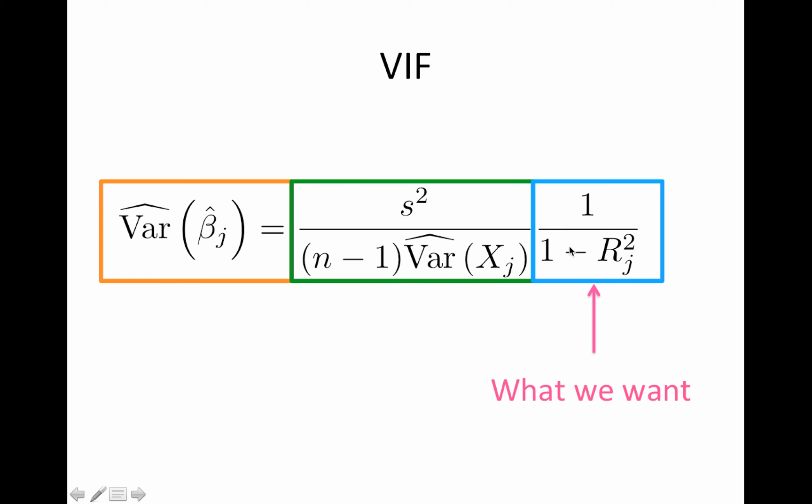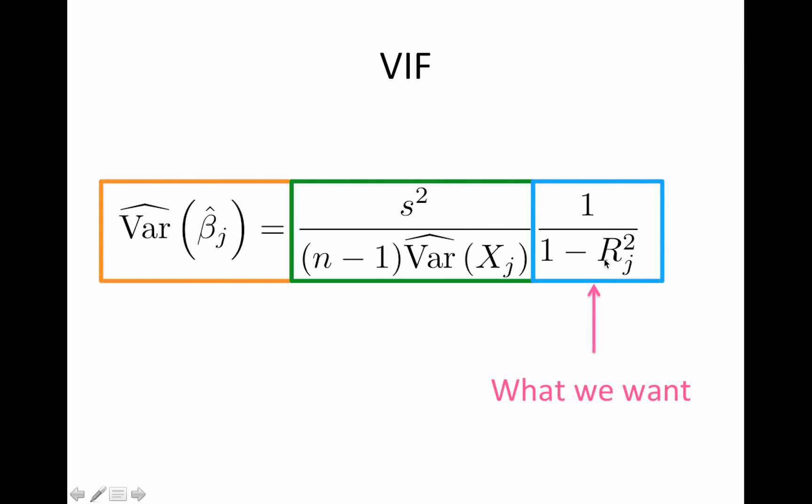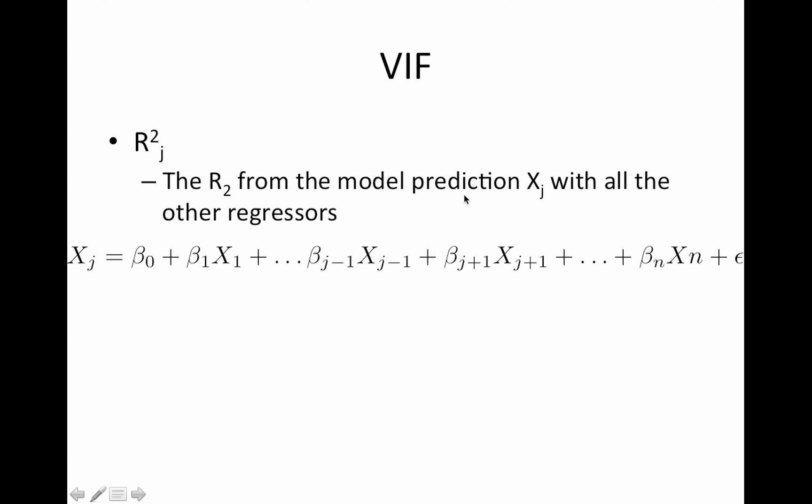All right, and last but not least is this term, one over one minus r squared j. I have not told you what r squared j is, I'm about to, but it turns out if you multiply these two things together, you get the original variance and therefore the blue box, which is what we want, is the orange box divided by the green box. So what is that thing? R squared j, one over one minus r squared j, so I'm talking about this little chunk here, is the r squared from the model prediction, from the model, predicting, and I shouldn't have used the word predicting, but you have xj on one side and all the other regressors on the other side. So here's xj, here are all the other regressors, and then an error term. So all you do is you run this model and you get the r squared from the model, and that's what r squared j is. Notice no data in here at all, only the regressors, so you can do this before you collect your data to make sure you're not about to make a big mistake.